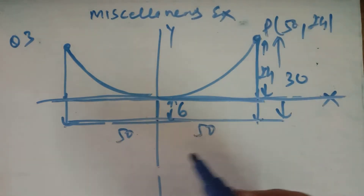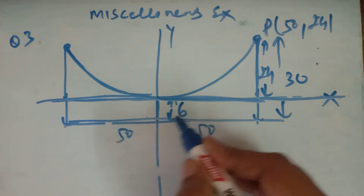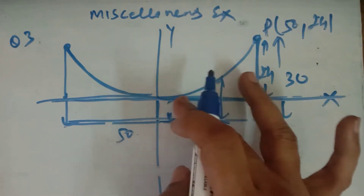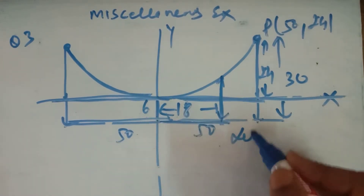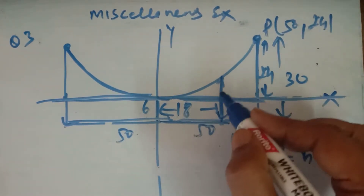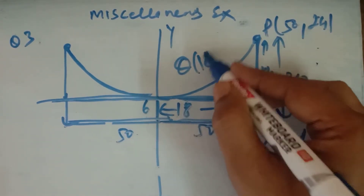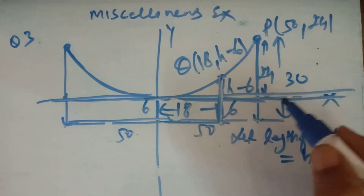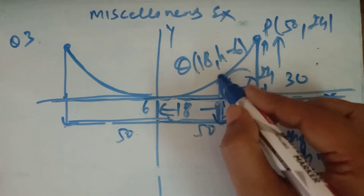आपको find करना है — find the length of the supporting wire attached to the roadway 18 meters from the middle. 18 meter दूरी पर एक wire बना हुआ है। Let length of the wire = h meters. यहां से यहां तक h है और यह 6 है, so this is h−6. So coordinates of Q: X = 18, Y = h−6.